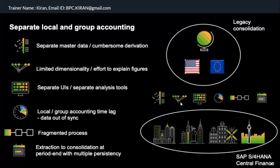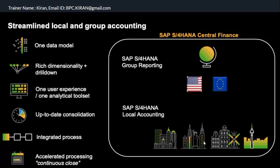SAP then introduced S4 HANA and as part of central finance, both local accounting and group accounting happen in one S4 HANA system. When you have group reporting and local reporting in one system, there is no ETL — no extraction, transformation, loading. Both data sets are in the same S4 HANA system, making reporting and reconciliation much easier.